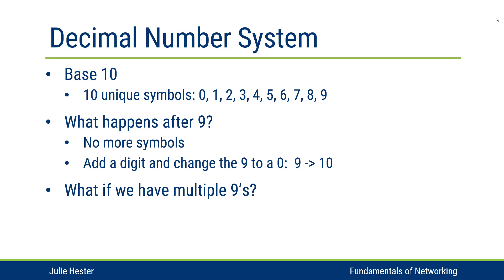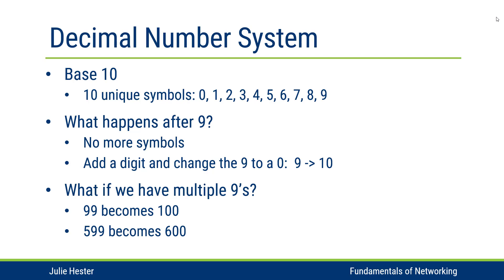If we have multiple nines, we continue doing the same thing. Ninety-nine can become 100, so the two nines become zeros and we've added a one to the leftmost position. And then 599 — we don't need to add another place value because we can increment the five to a six and then change the nines to zeros.